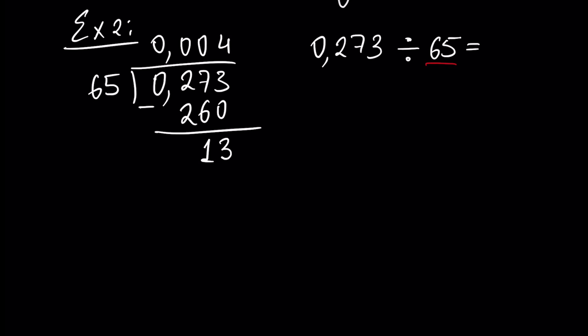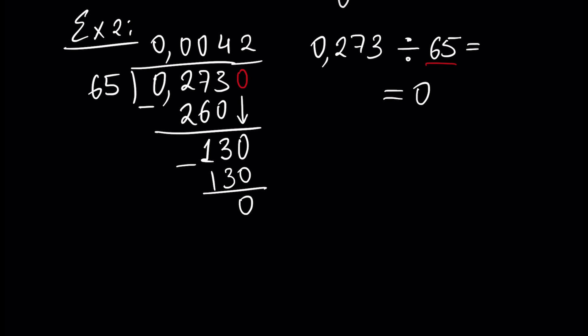Next, we have a 0 here — we can write it or avoid writing it, but anyway we have it. Write this 0 here. How many 65s we have inside 130? Exactly 2. And 2 times 65 is 130, so we write minus 130, which is 0. Our answer is 0.0042.